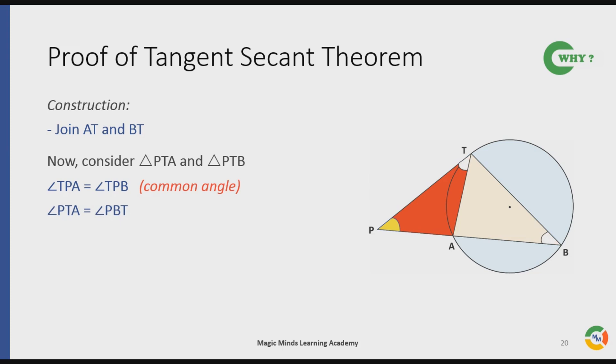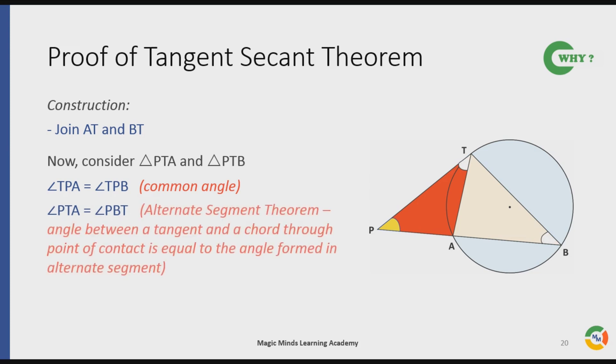Why? The answer is Alternate Segment Theorem. For quick revision, Alternate Segment Theorem says that the angle between a tangent and a chord through the point of contact is equal to the angle formed by that chord in the alternate segment.